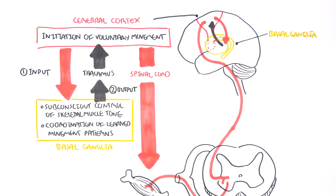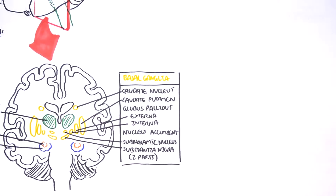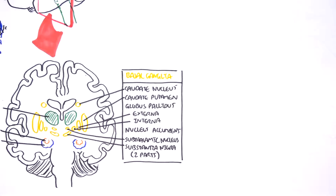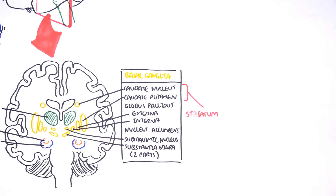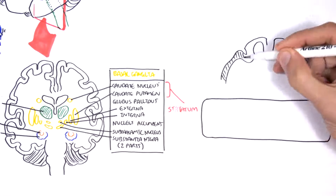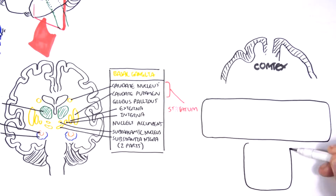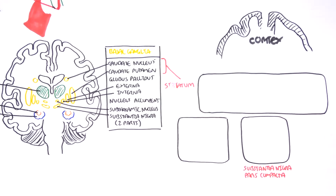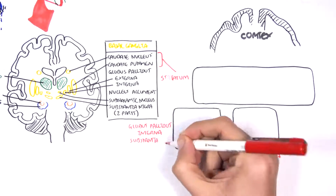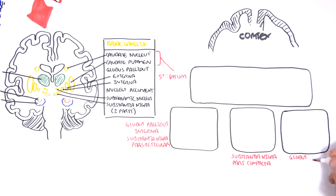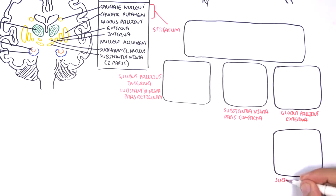Let's go back to the big diagram and learn about the interconnections within the basal ganglia and the disruption that results in Parkinson's disease. The caudate nucleus and caudate putamen is also known as the caudate striatum. The components include the caudate striatum, the substantia nigra pars compacta, the globus pallidus interna, the substantia nigra pars reticulata, the globus pallidus externa, the subthalamic nucleus, and the thalamus.